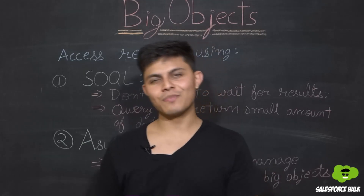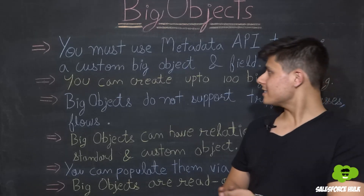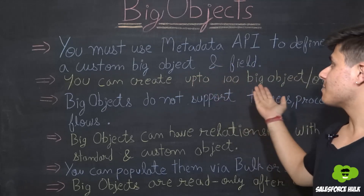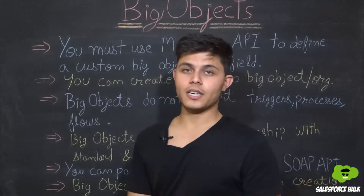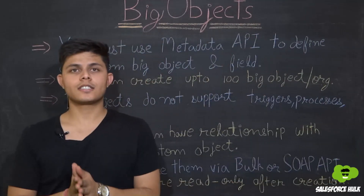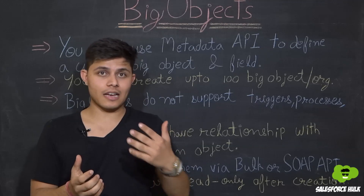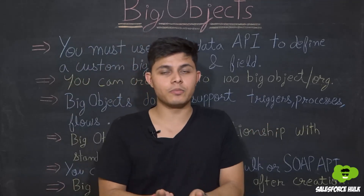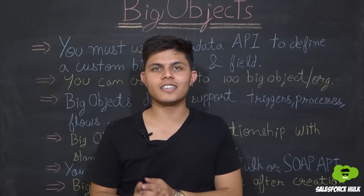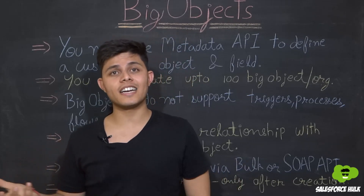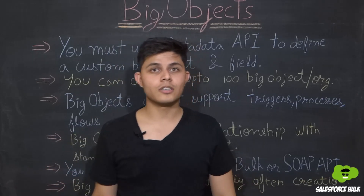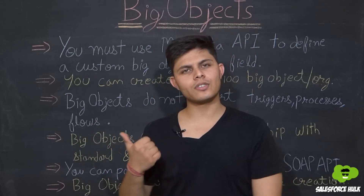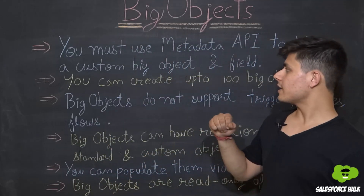Now for the important points to remember with big objects. First, you must use Metadata API to define a custom big object and its fields — not point-and-click tools.